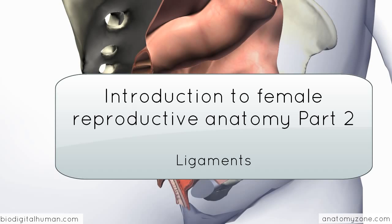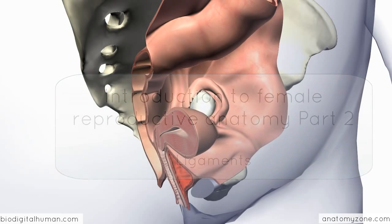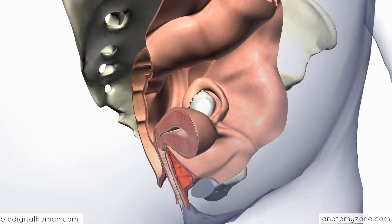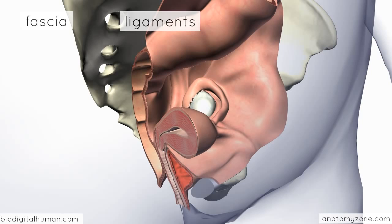In this next part of the tutorial, I'm going to take a look at some of the other details of the female reproductive system. We're going to build on what we looked at before and fill in some of the gaps. In the last tutorial, I mentioned ligaments which support the viscera and attach from pelvic organs to the pelvic side walls. In this first part, I'm going to talk about the fascia and ligaments associated with the female reproductive tract.